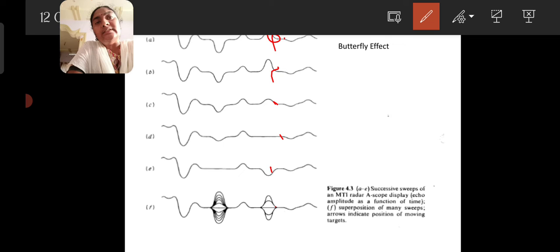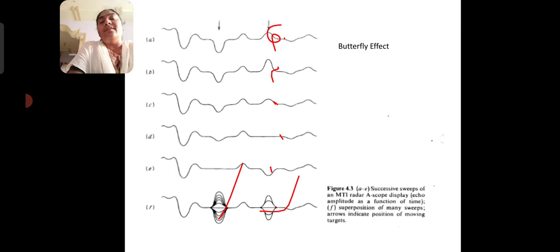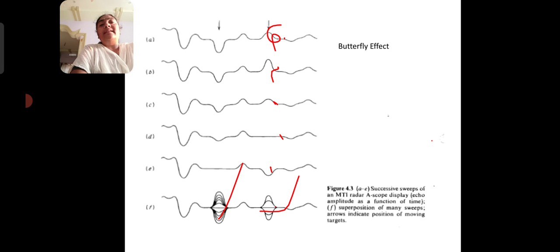When all sweeps are superimposed, moving target amplitudes show fluctuation. This type of sweep analysis is called the butterfly effect. We take successive sweeps for an MTI radar A-scope display, where echo amplitudes fluctuate as a function of time. By superimposing all successive sweeps, amplitude fluctuations allow us to determine whether a target is moving or stationary.